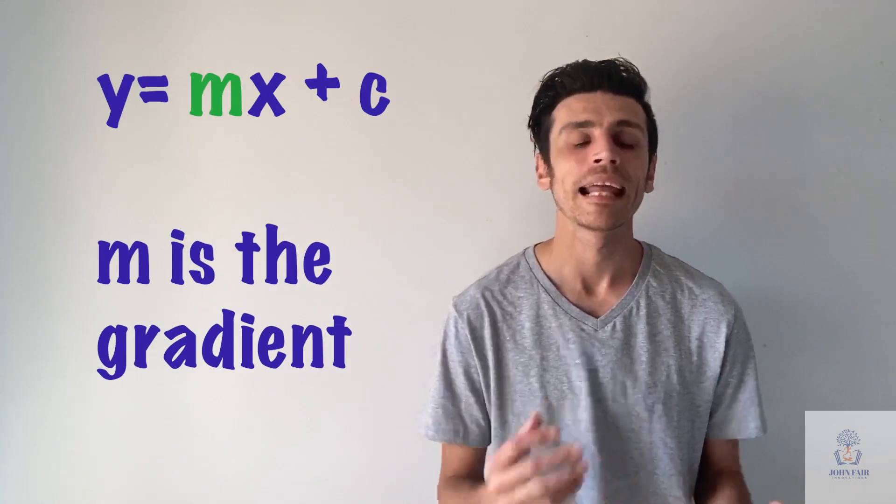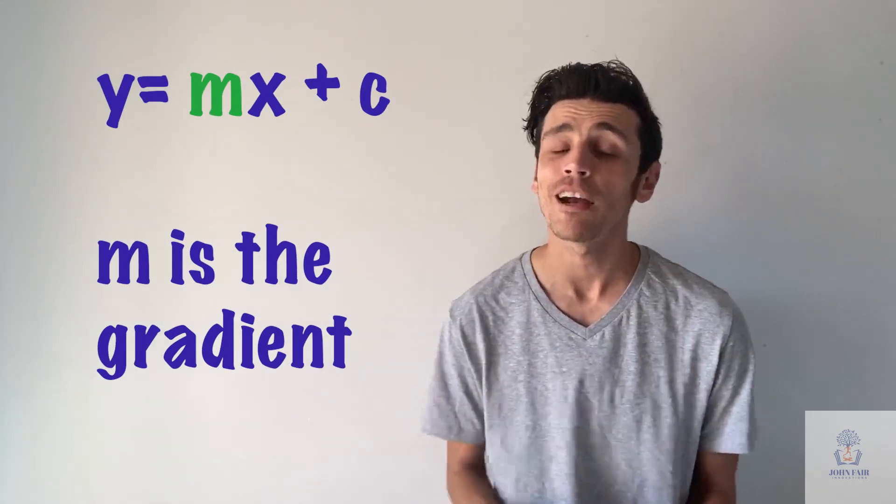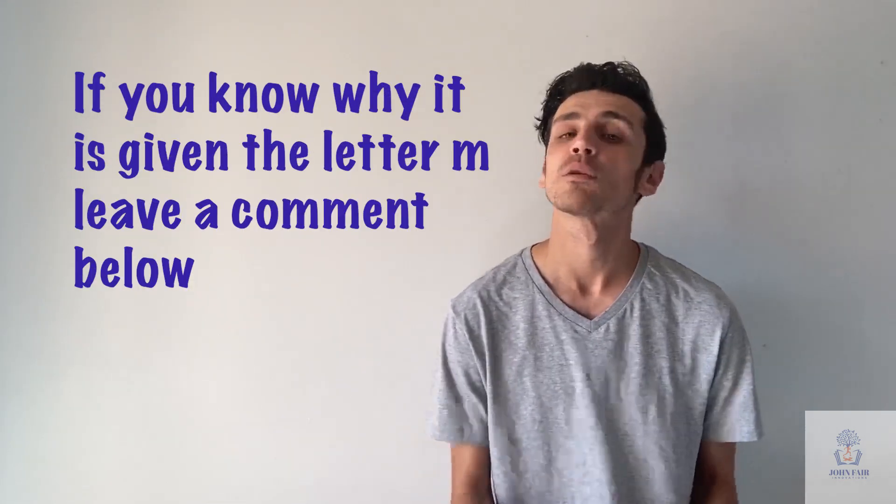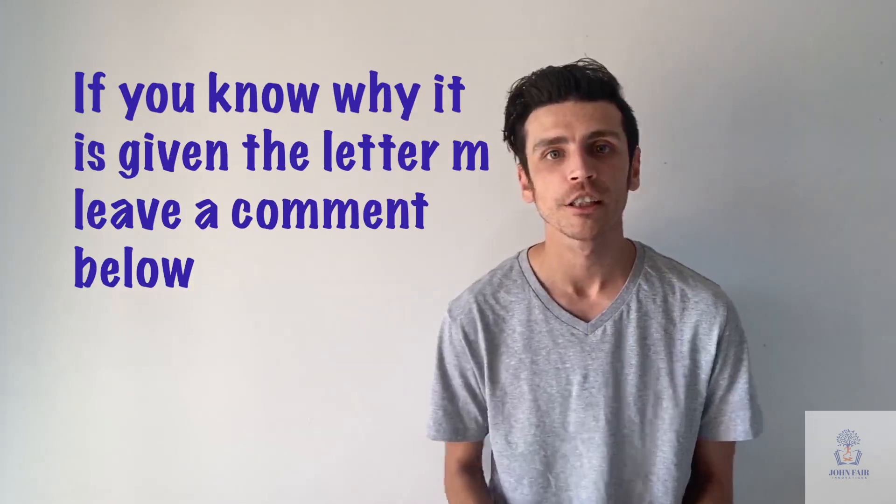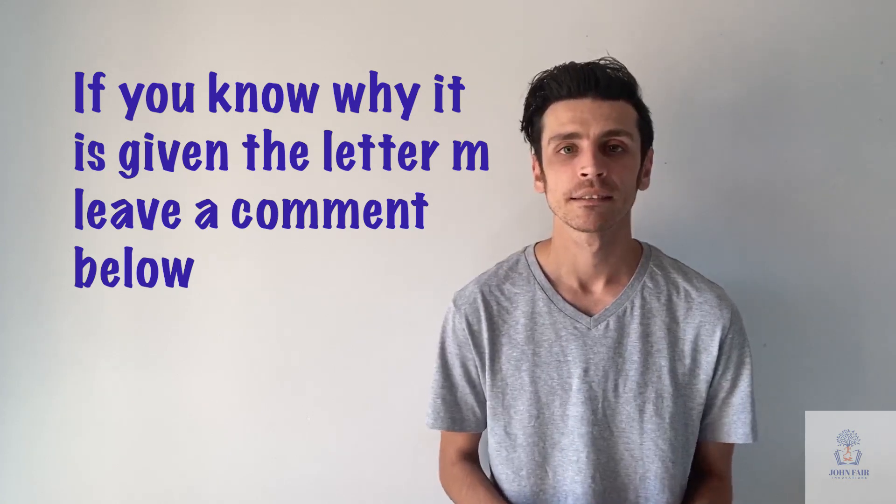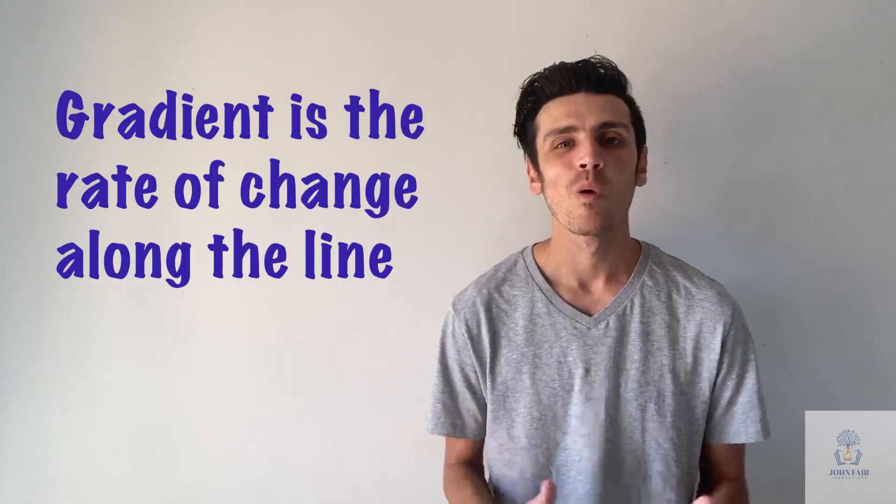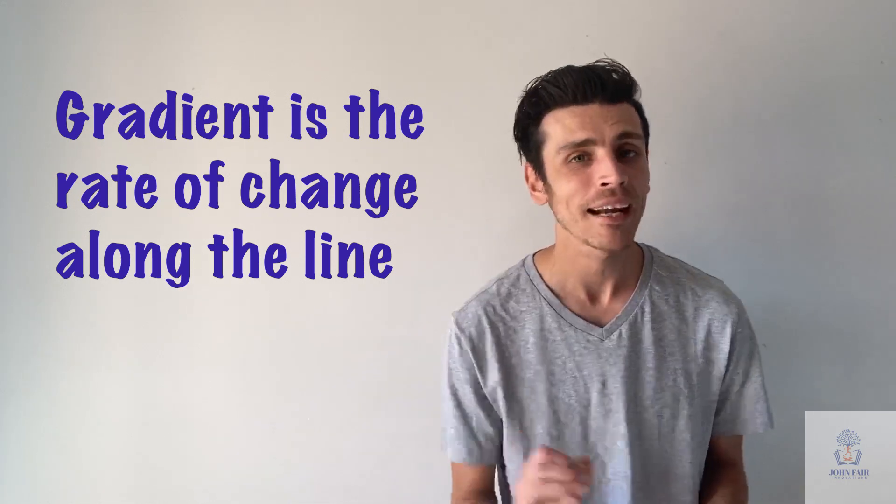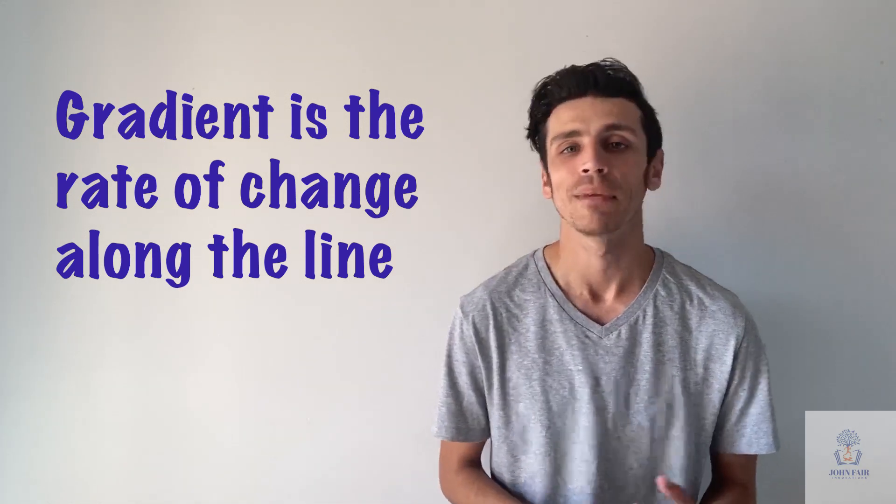So the next thing we're going to look at is the m, and m actually represents gradient. And there's a lot of conjecture in mathematics because no one is 100% sure where the m actually originates from. There's a lot of different opinions as to where it starts from, some French origins, other different theories. So I can't actually explain to you today where the m actually originates from, but I can explain to you what gradient actually means.